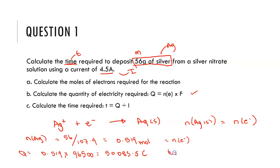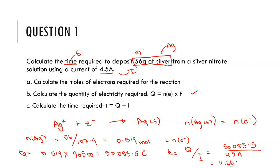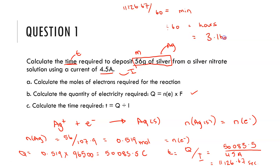Now we know the total charge in the cell, the next step is to find the time required — which is what the question originally asked for. Time equals Q divided by current, so 50,083.5 divided by 4.5 amps gives 11,129.67 seconds. Dividing by 60 twice to convert to hours gives approximately 3.1 hours to deposit 56 grams of silver using a 4.5 amp current.